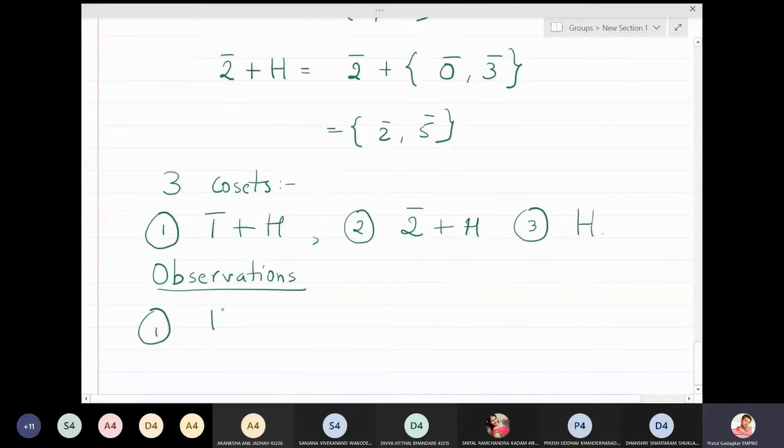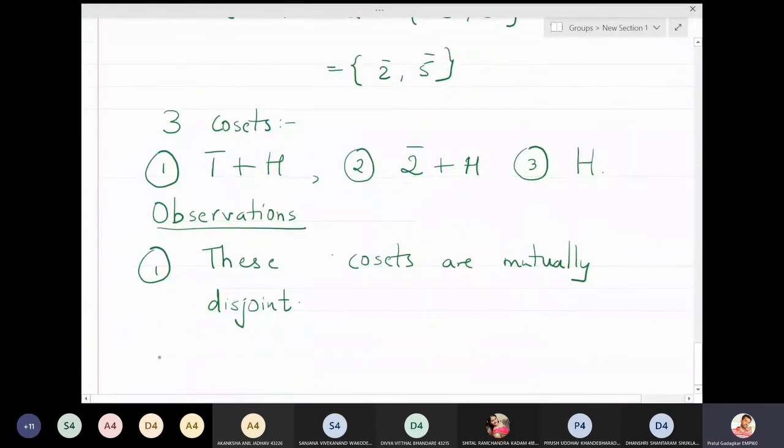So that is my first observation: these cosets are mutually disjoint. This is just an observation. We have to later on prove that these cosets will be disjoint from each other.